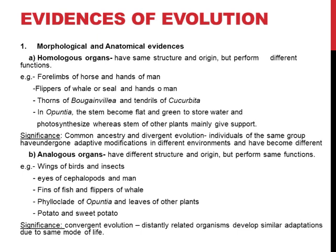Next is the phylloclade of opuntia — that is the stem which has become flat and green to store water and photosynthesize. The phylloclade of opuntia and the leaves of other plants are analogous to each other: the phylloclade of opuntia photosynthesize and leaves of other plants also photosynthesize, so same function, but origin is different. The phylloclade's origin is the stem, whereas leaves are developed from their own leaf structure and origin.